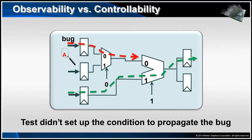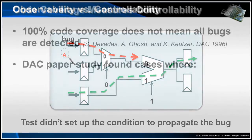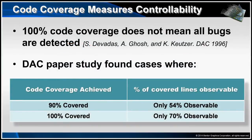Now assertions, particularly low-level assertions embedded in the design, improve observability. This means that the bug that might have been activated during simulation doesn't have to propagate all the way to an output or some other point in the design that is being observed.